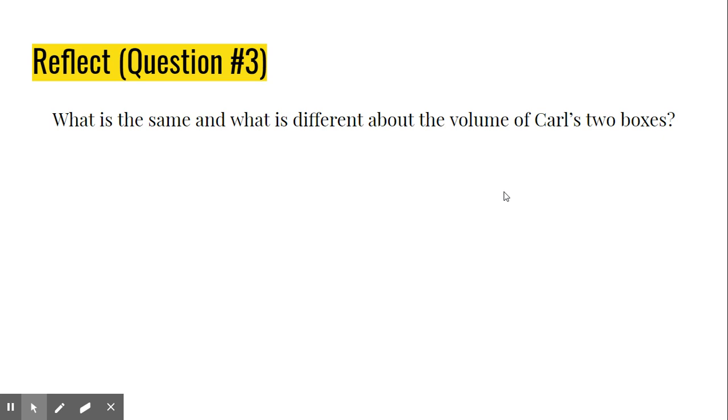And here's a good question to see if you understand what's going on with the different measurements. What is the same and what is different about the volume of Carl's two boxes? Well, if you notice, they both have six, a measurement of six. However, the first box had cubic feet, the second box had cubic inches. So it's very important to pay attention to what unit of measurement is being used, because obviously an inch is much smaller than a foot. That would make a big difference between the two boxes, even though they're similar in shape and ratio.